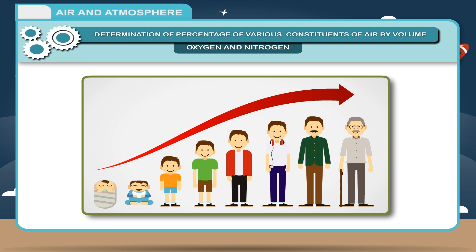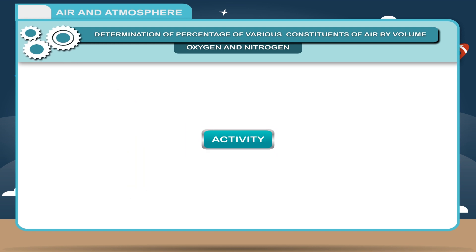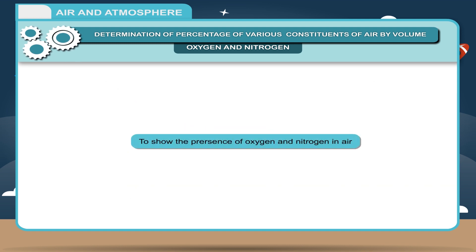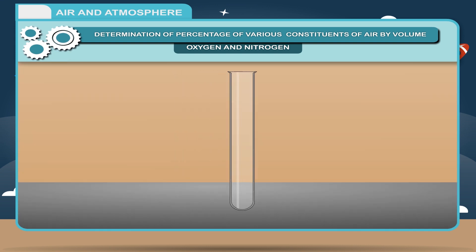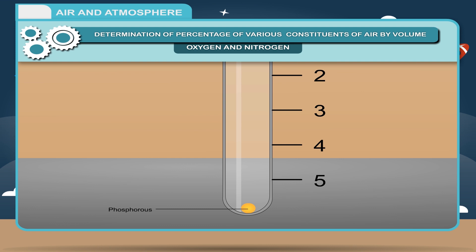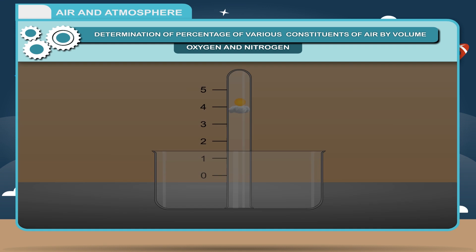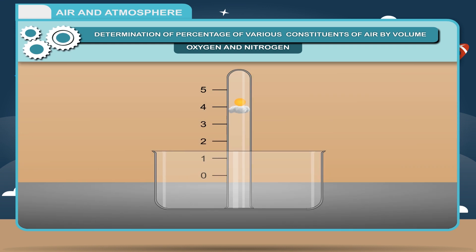Let us perform an activity to show the presence of oxygen and nitrogen in air. Take a test tube and mark five equal columns in it with a colored pen. Place a small piece of phosphorus in the test tube and fix a cotton wool plug over it. Invert the test tube in a beaker of water so that the water level inside and outside is at the zero mark.